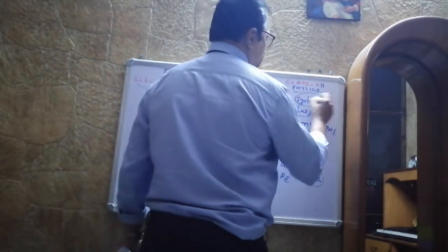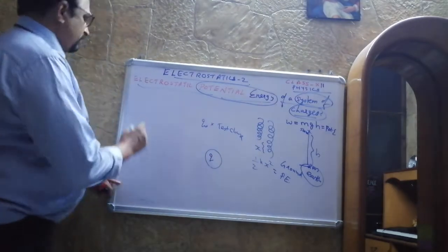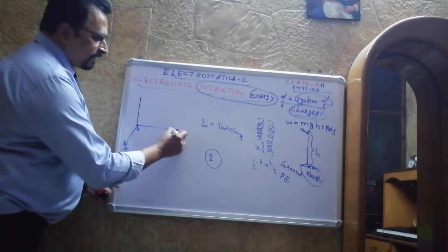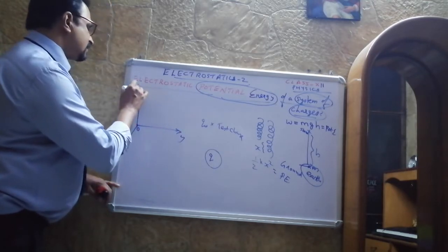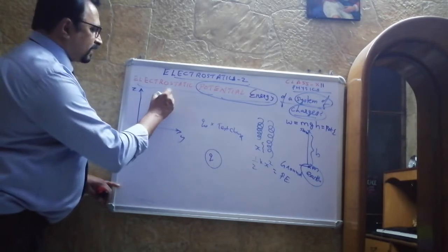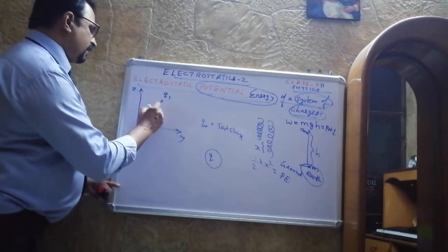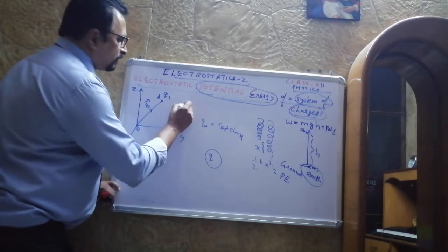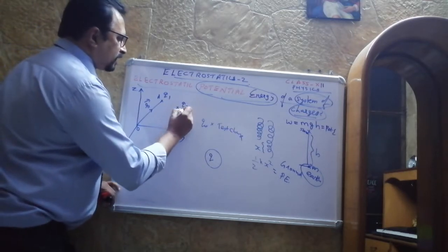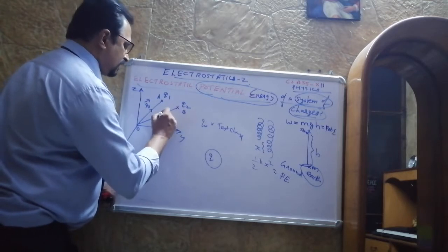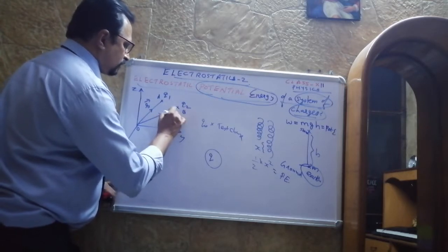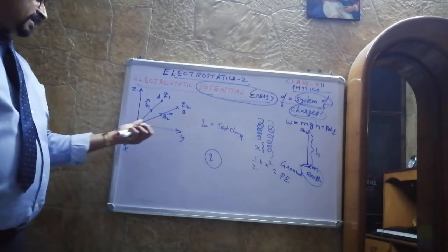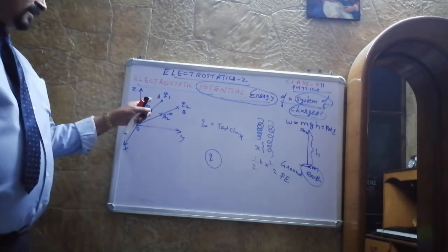Now, one more term here is 'system of charges' — what is the meaning of that? Consider an origin with x, y, and z axes. Suppose a charge q₁ is located at point A whose position vector is r₁, another charge q₂ is located at point B whose position vector is r₂, and another charge q₃ is located at point C whose position vector is r₃. Like that there are n charges.